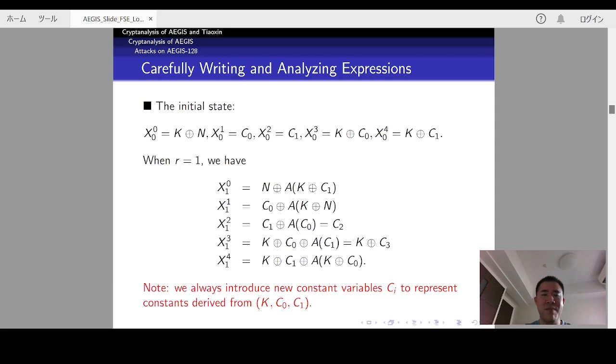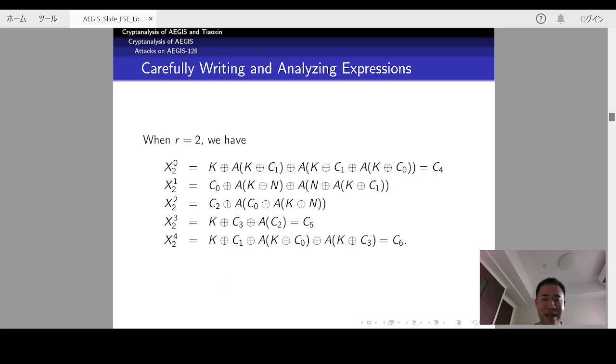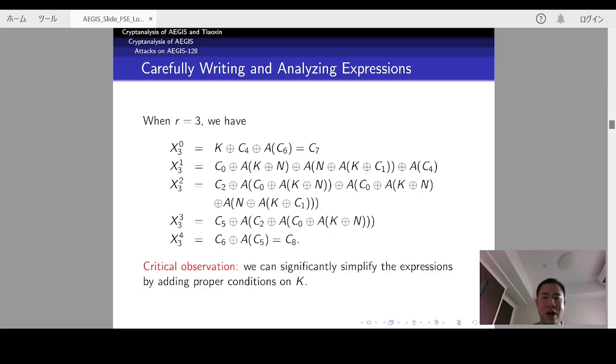With the problems in mind, we now carefully write and analyze the actual expressions after each round of update. After one round update, the expressions are listed here. You can see that they are very simple. Note that we always introduce new constant variables Ci to represent the constants derived from K, C0, and C1. After two rounds of update, the expressions are still very simple.